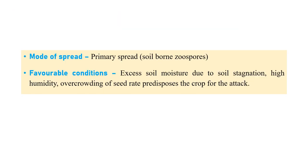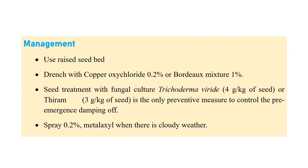The primary spread is generally by means of zoospores. Favorable conditions for the disease are excess moisture, water stagnation, and high humidity. Regarding management: raised bed cultivation is the best practice, along with soil drenching with copper oxychloride at 0.2%. Bordeaux mixture can also be recommended. Seed treatment with Trichoderma viride at 4 g per kg of seed or Thiram at 3 g per kg of seed can be recommended. Spraying metalaxyl at 0.2% during cloudy weather is also a management practice.